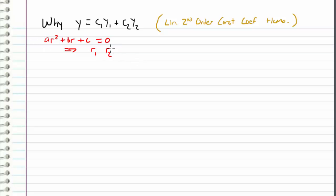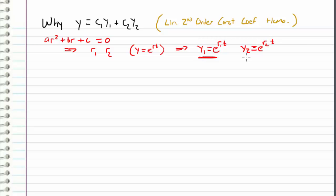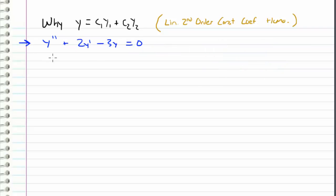After we got these two roots, since we assumed the solution is of the form y equals e to the r times t, this gives us two solutions: y1 associated with the first root, and y2 associated with the second root. So if both of these are valid solutions, why do we express our solution as linear combinations of these two? Let's consider the following differential equation: y double prime plus 2y prime minus 3y equals zero.